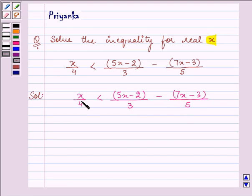Now on multiplying both the sides and each term by 60, that is the LCM of 4, 3 and 5, we have 15x is less than 20 bracket 5x minus 2 minus 12 bracket 7x minus 3.